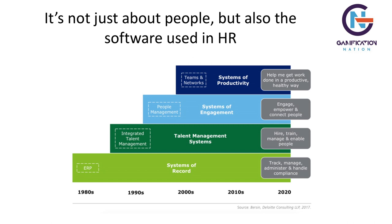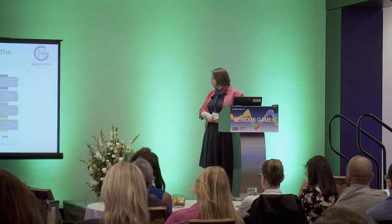We see a trend changing: earlier tools tracked, managed, and administered compliance — holidays, work-related measures. Now we have talent management systems tracking where people are going. What's coming are engagement-type systems that actually empower and connect people, and the next level is productivity. Josh Bersin from Deloitte said this year that the gamification of HR is really topical.